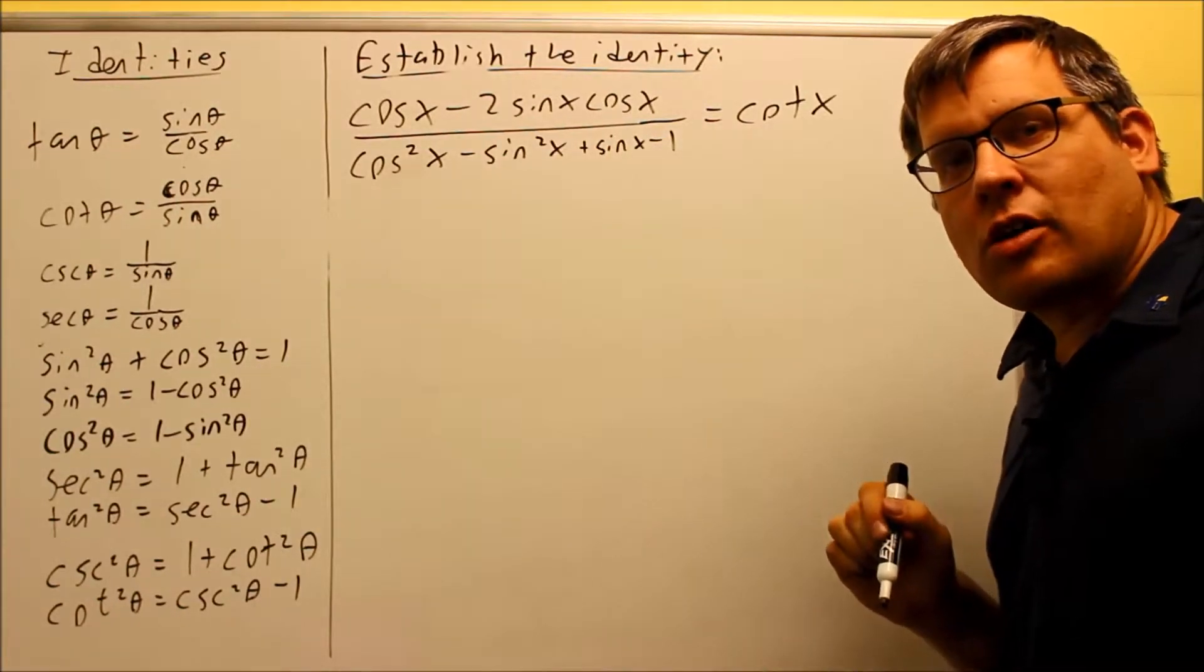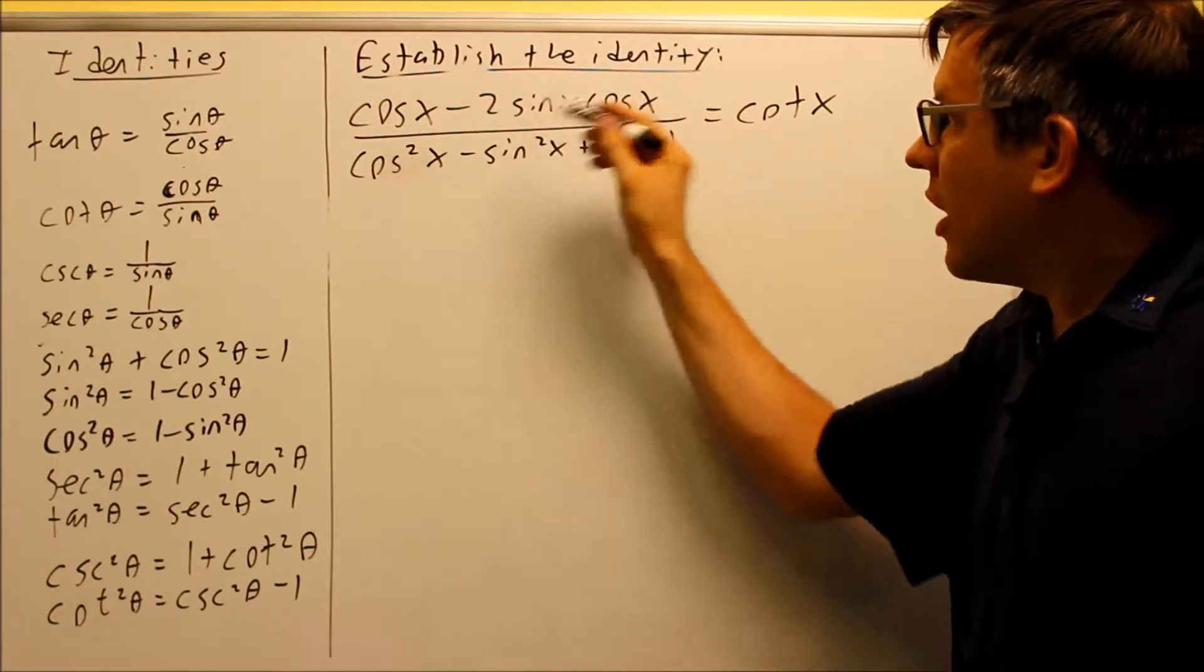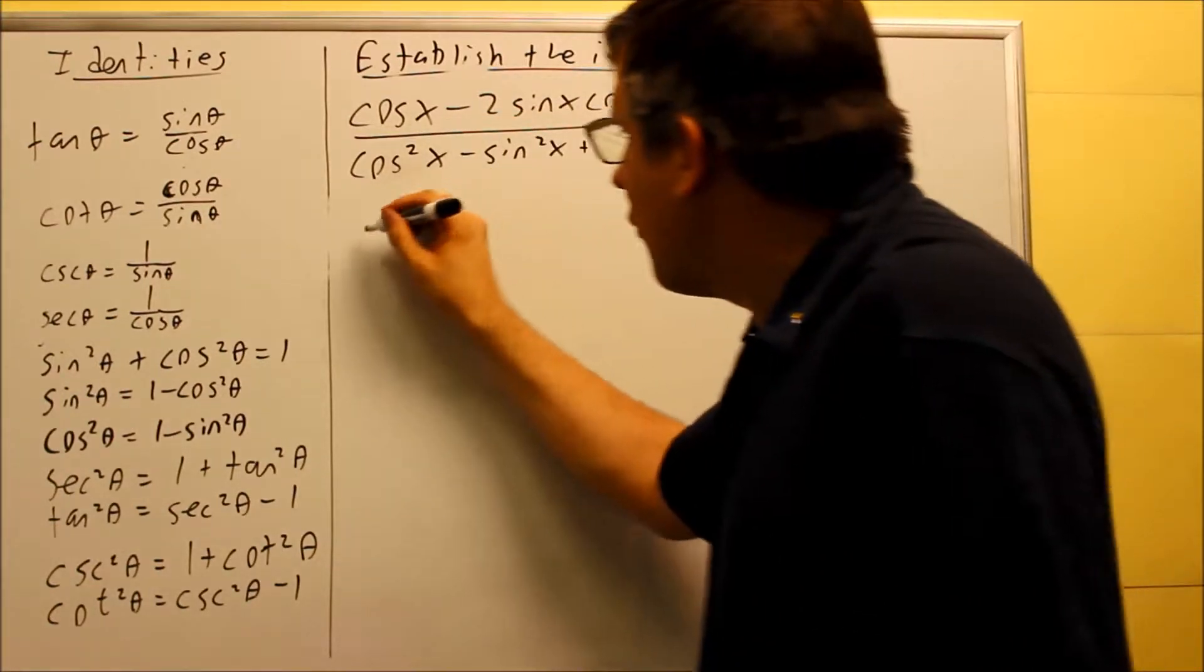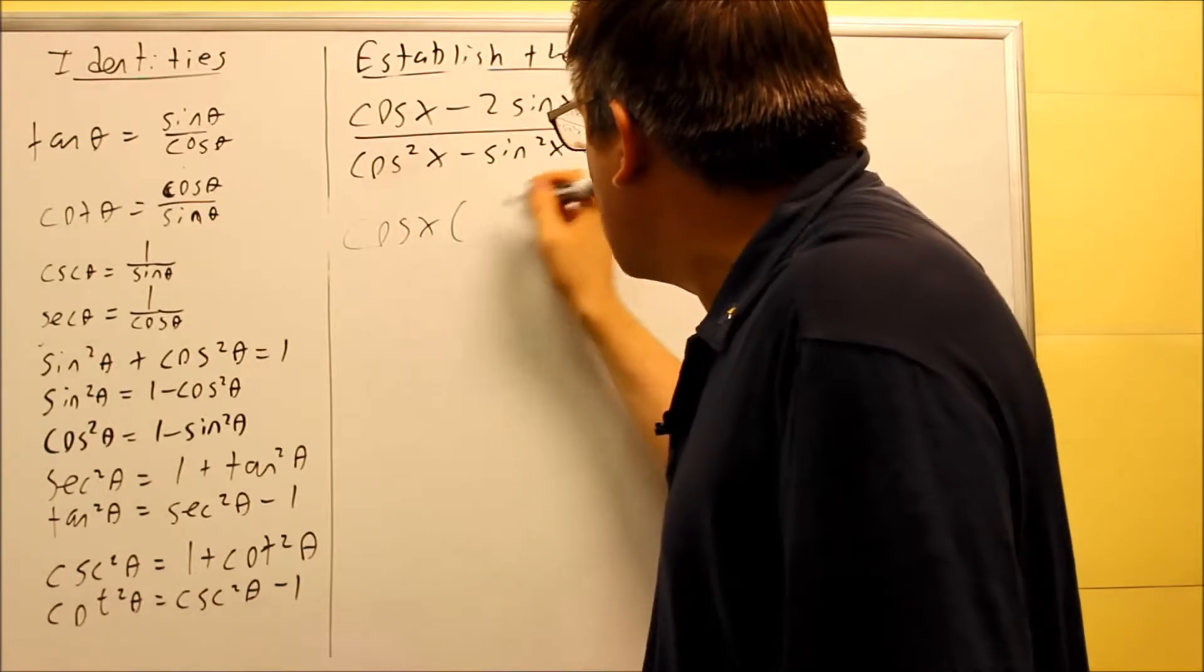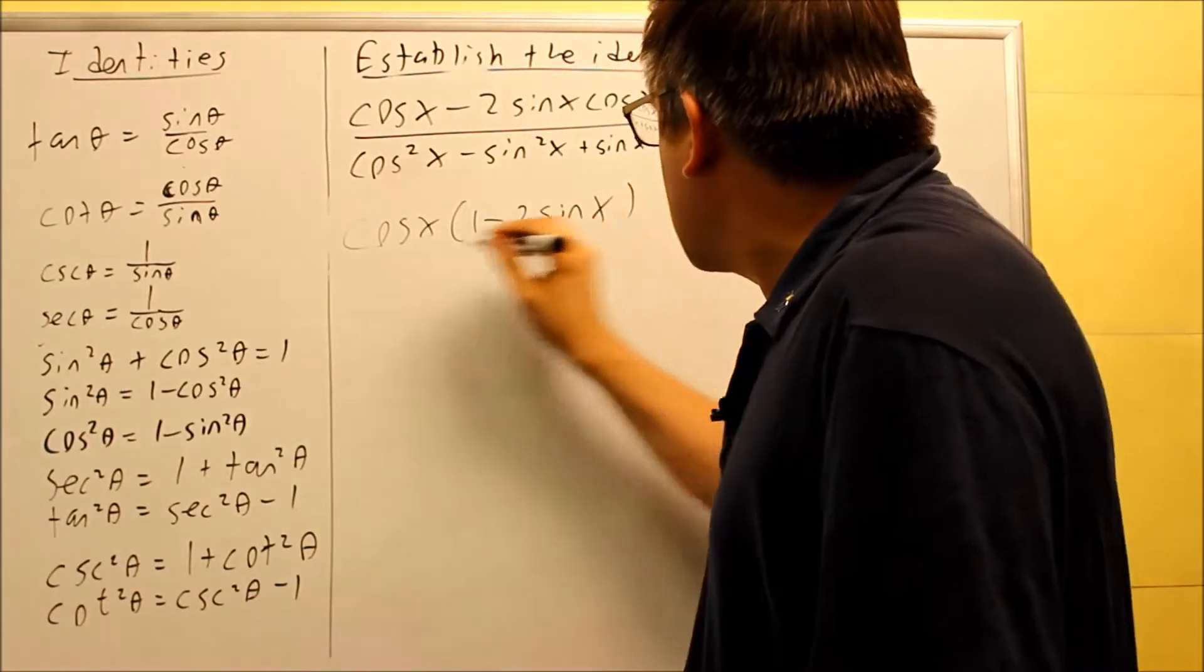So that's another technique I can apply right away, is factoring out a cosine. So I'm going to do that on top. I'm going to factor out the cosine x. So cosine x, and I get 1 minus 2 sine x.